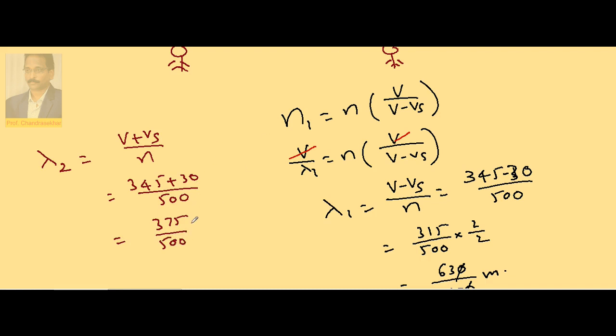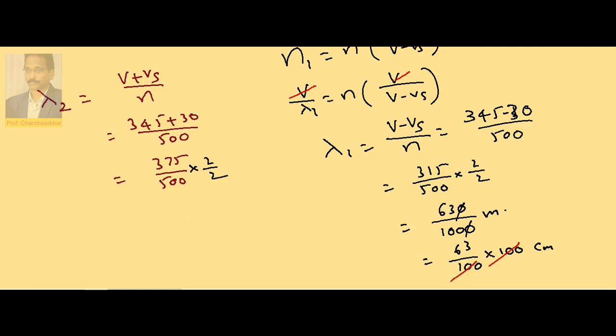Multiply the numerator and denominator with 2. Then it becomes 1000 in the denominator, 375 into 2, which is 750 meters. Cancel a zero. If I convert this into centimeters, this becomes 75 centimeters.